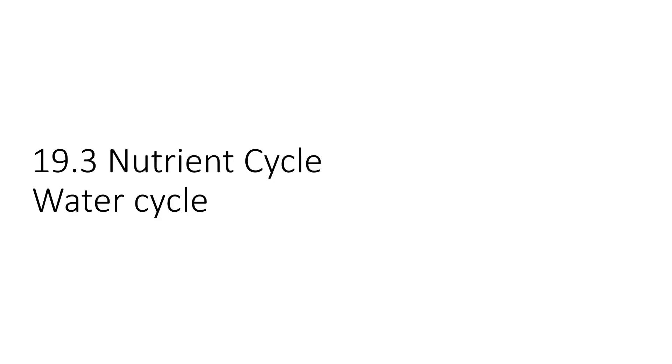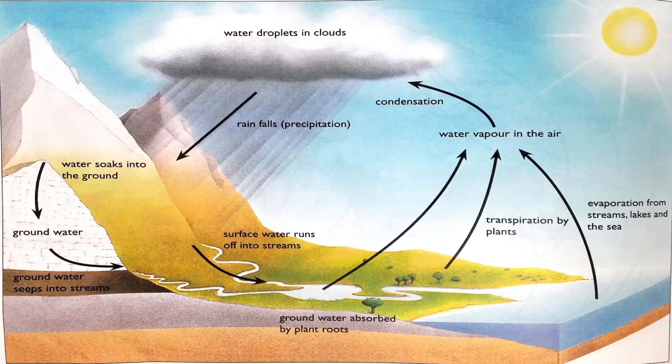Next is section 19.3, the nutrient cycle. The first one is the water cycle, which is also learned in geography — it's nearly the same thing. Groundwater is absorbed by plant roots, and water is transpired by plants.